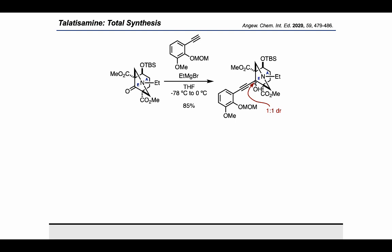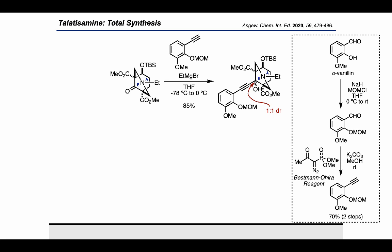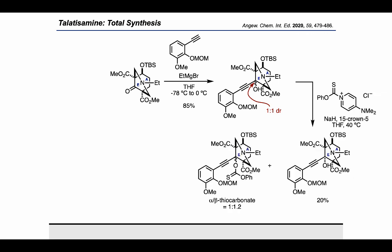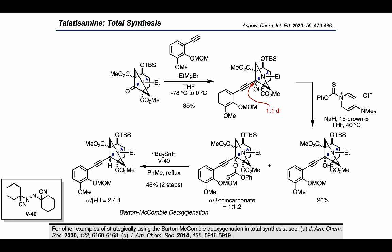This pronucleophile arises from ortho-vanillin by carrying out a MOM protection followed by treatment with the Bestmann-Ohira reagent to convert the aldehyde into an alkyne. Getting back to the route, the tertiary alcohol could be activated as the thiocarbonate, a reaction that returns some of the alpha-hydroxy diastereomer of the starting material in the product mixture. The thiocarbonate, obtained as a diastereomeric mixture, was carried through a Barton-McCombie deoxygenation using tributyltin hydride and V-40, which is an alternative to AIBN, providing the product where the alkyne had successfully been appended to the AE ring fragment.